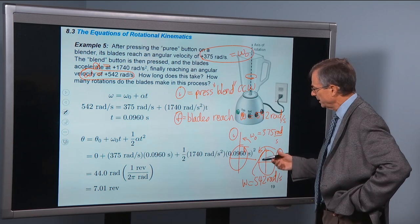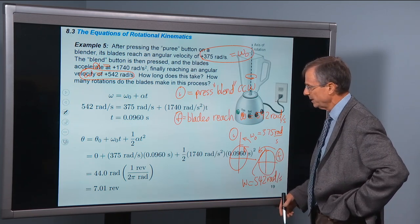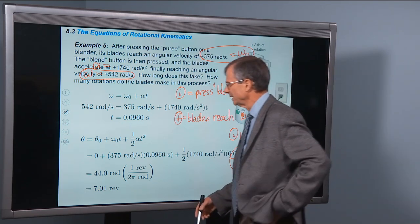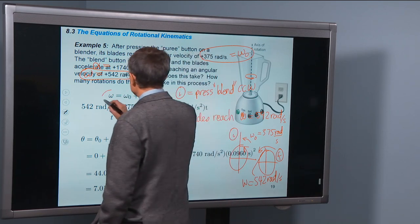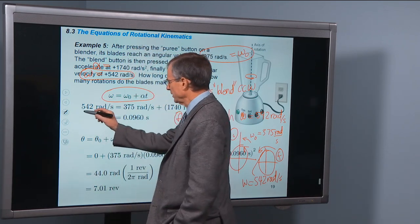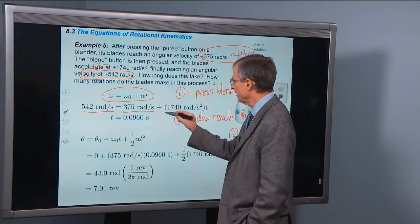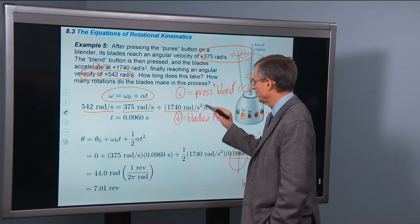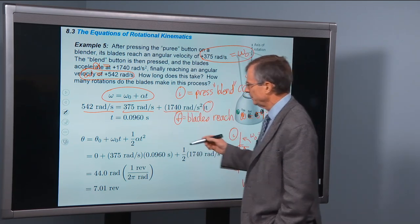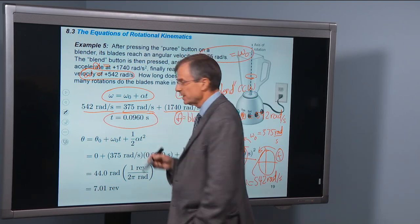Variables. Plug in numbers for the variables and put in the equations to solve. Let's look first at this velocity equation. The final is 542, the initial is 375. We have the acceleration so we can solve for the time. Solve that equation for the time, and there you go.